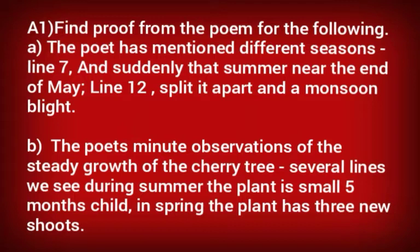In line 7 we see 'and suddenly that summer near the end of May,' and in line 12, 'split it apart in a monsoon blight.' Here we come to see that the poet has described different seasons — two seasons are mentioned here.